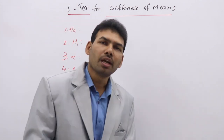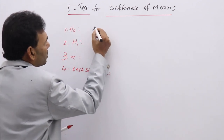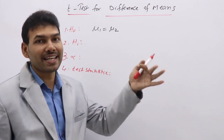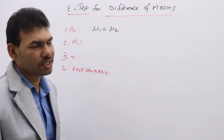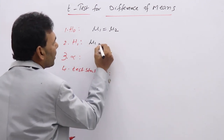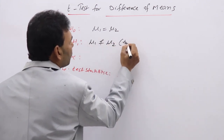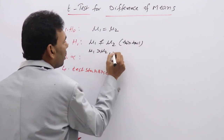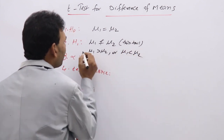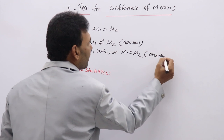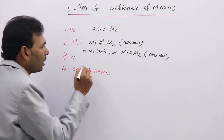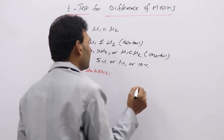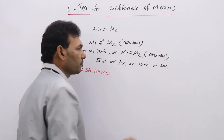For a large sample difference of means, H0 states both means are equal. But when sample sizes are less than 30, we use the small sample T-test for difference of means. H1 may be mu1 not equal to mu2 (two-tailed), or mu1 greater than mu2, or mu1 less than mu2 (one-tailed). Alpha is 5%, 1%, 10%, or 2%.